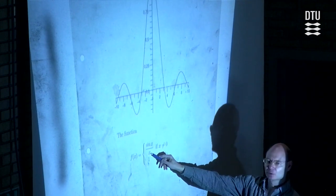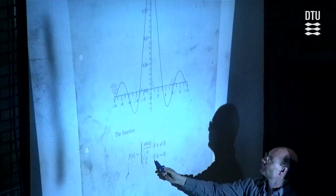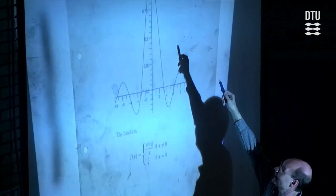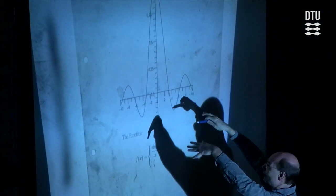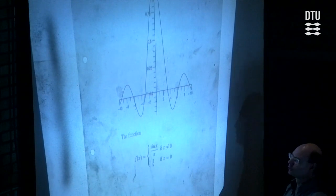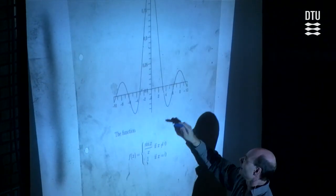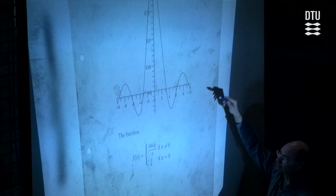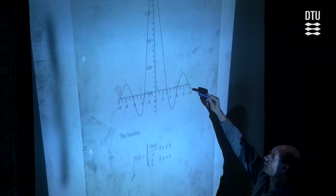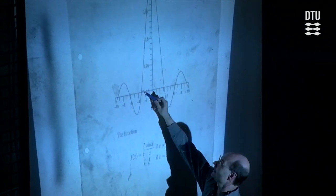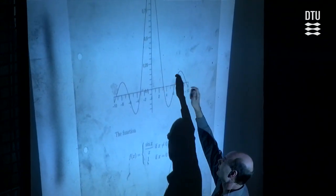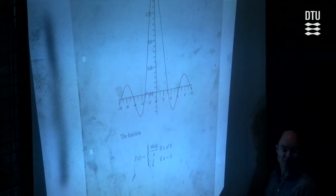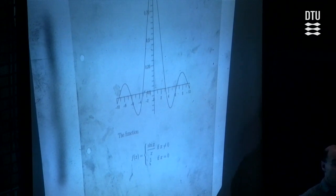For x not equal to zero, this is sin(x)/x. This is not defined for x equal to zero, so we put it equal to the limit, which is 1. You get a smooth function that starts at 1, then oscillates. Because of the sine it continues to oscillate, but because you divide by x, the oscillations get smaller and smaller. So this is an example of a function that is in C₀(ℝ).